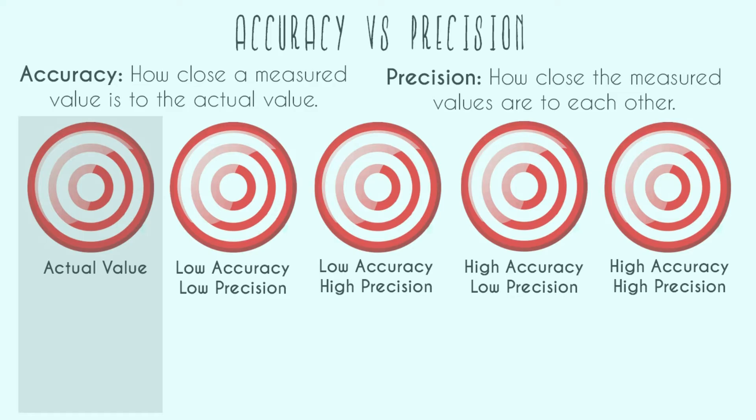Just some definitions, and I'll do a bunch of examples. Accuracy is how close a measured value is to the actual value, and precision is how close the measured values are to each other.